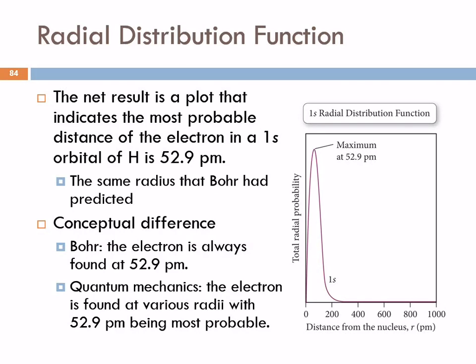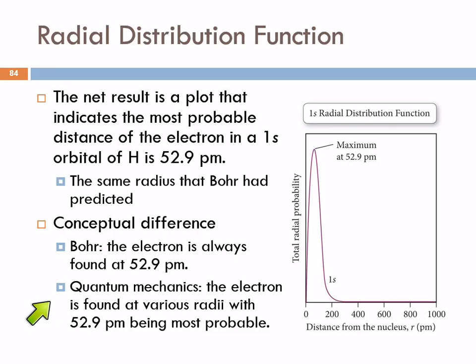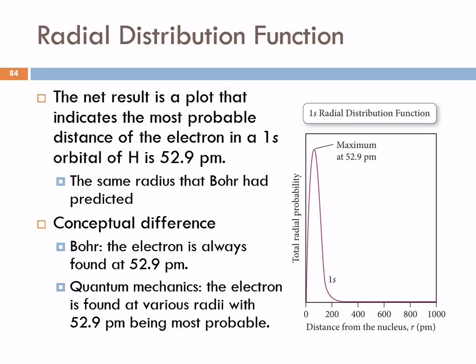But there's a very important conceptual difference. In the Bohr model, the electron is orbiting the nucleus like the Earth orbits the sun, and so that electron is always at 52.9 picometers. In quantum mechanics, the electron is found at many different radii, but 52.9 is just the most probable. That's where it's most likely to be, but it is not necessarily there.